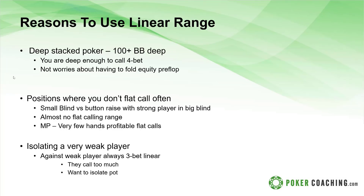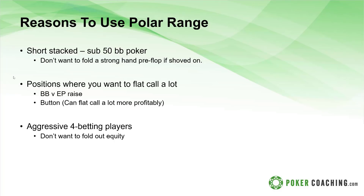Reasons to use a polar range: sub-50 big blind stacks, where you don't want to fold strong hands pre-flop if shoved on. Also positions where you want to flat call a lot — the big blind versus early position, or the button versus any raise. Many people think the button should have the highest three-bet percentage, but it's actually likely your lowest, because flat-calling in position is so profitable. Use polar ranges also against aggressive four-betting players.